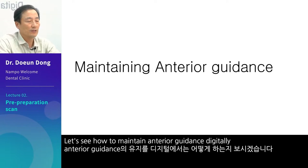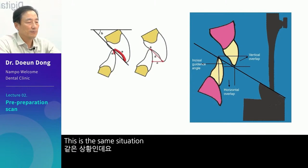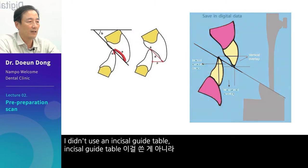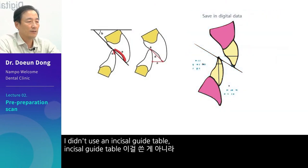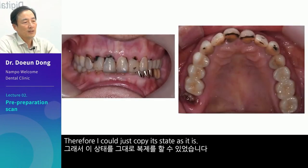Let's see how to maintain anterior guidance digitally. To reenact the external diameter of the maxillary tooth number one on the lingual side, I didn't use an incisal guide table. I just saved it as digital data by scanning it. Therefore, I could just copy its state as it is.